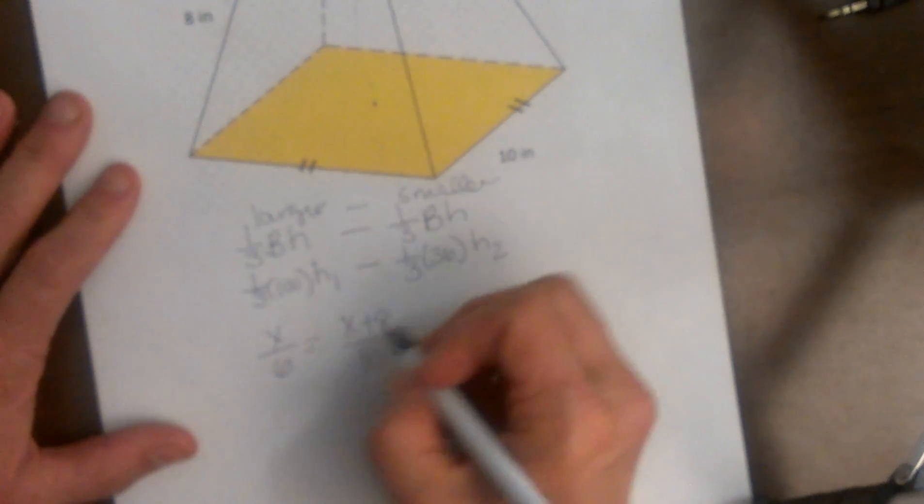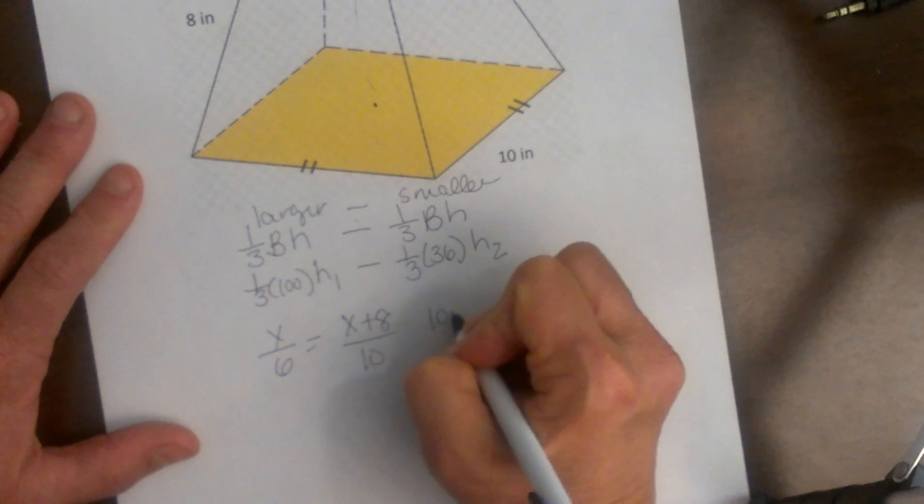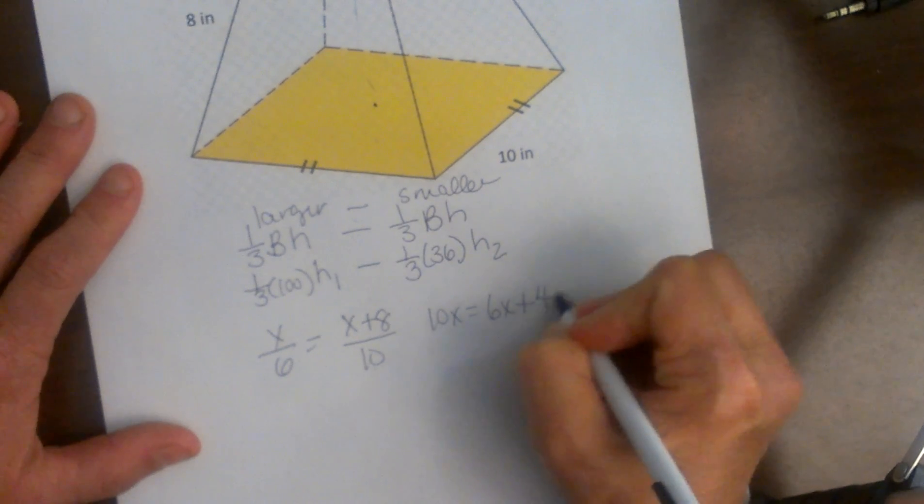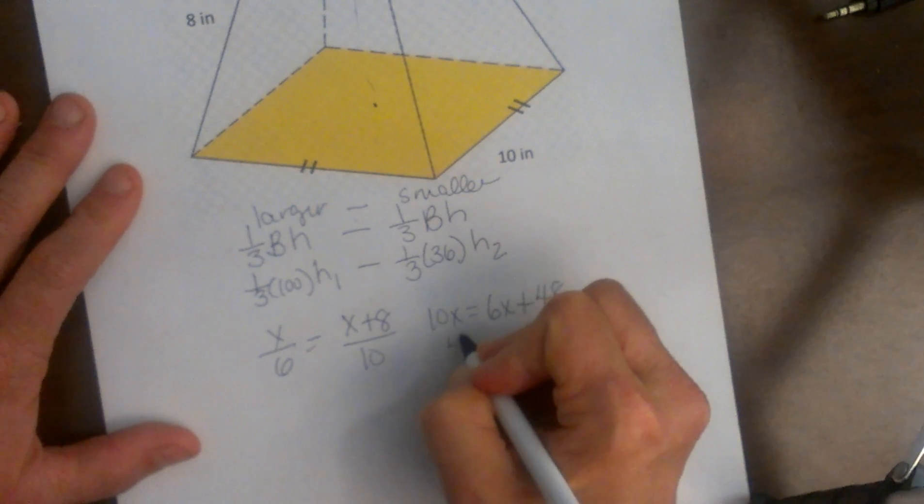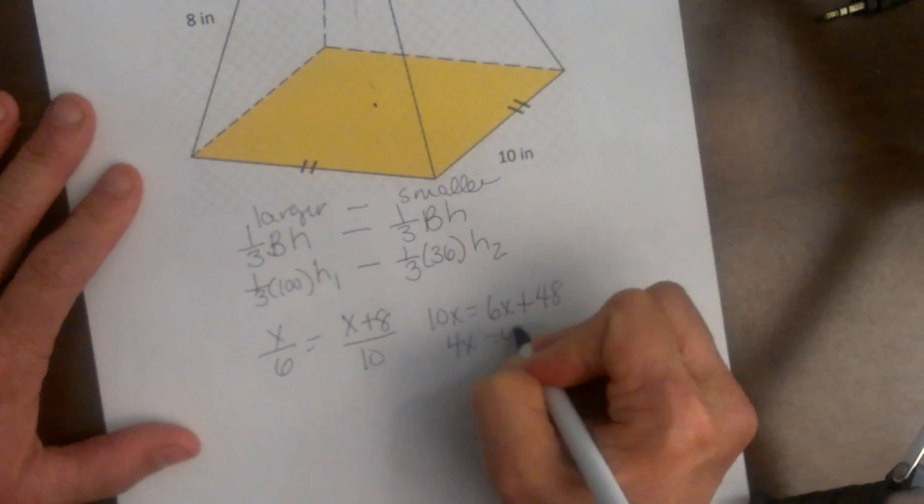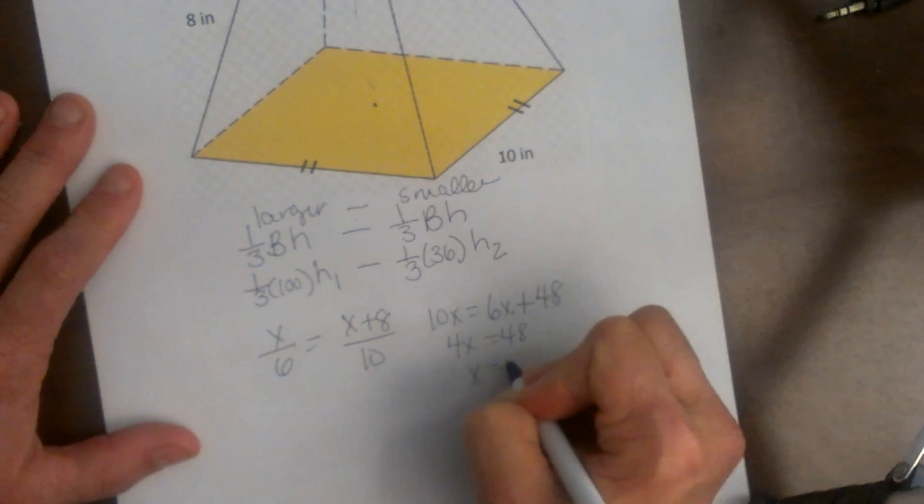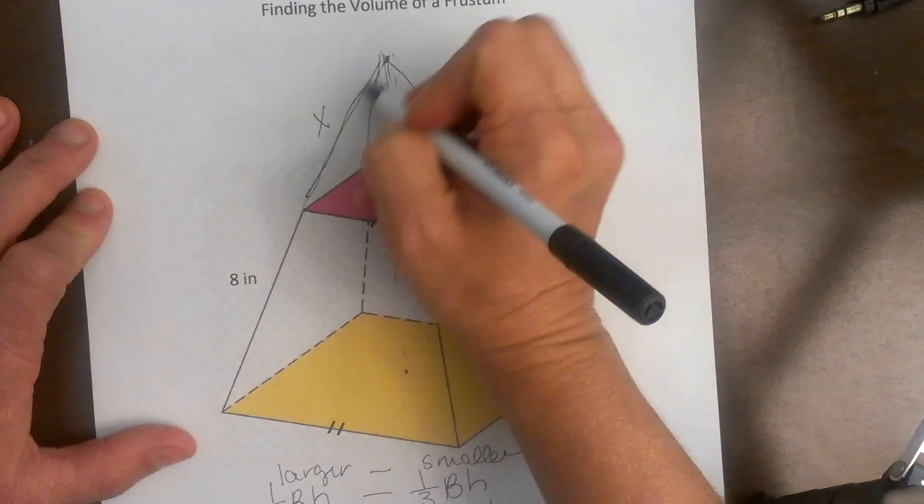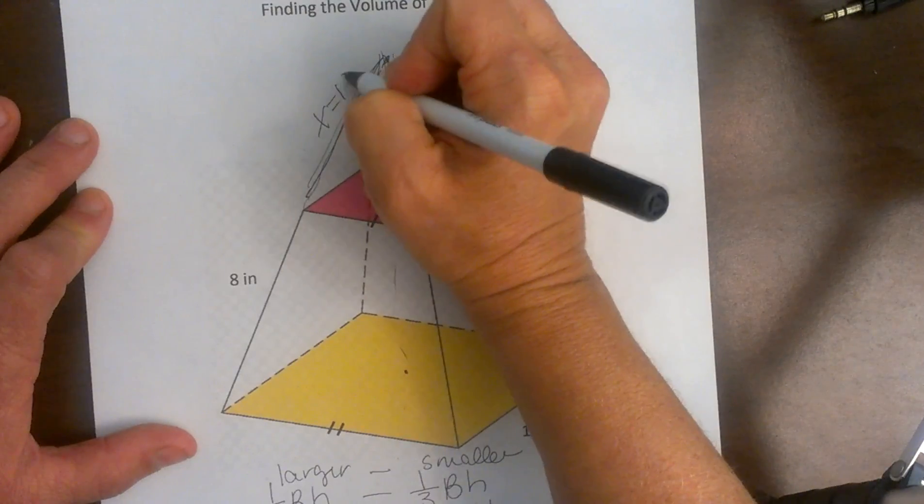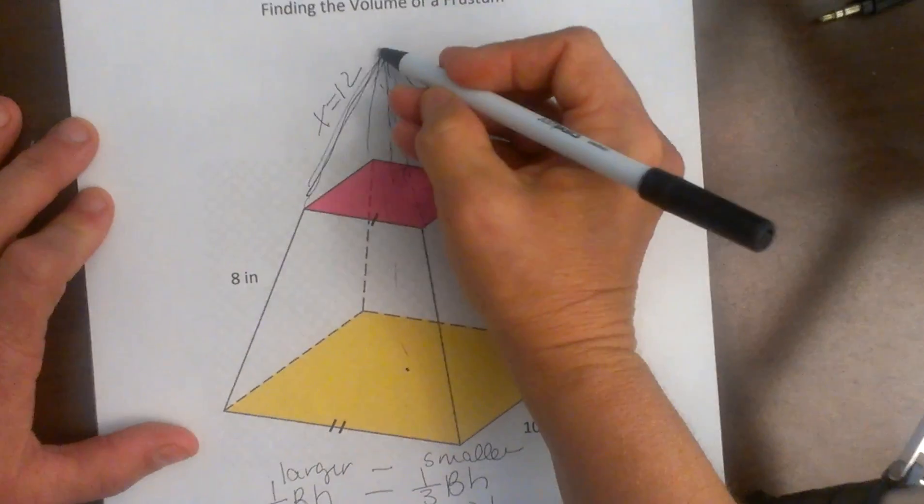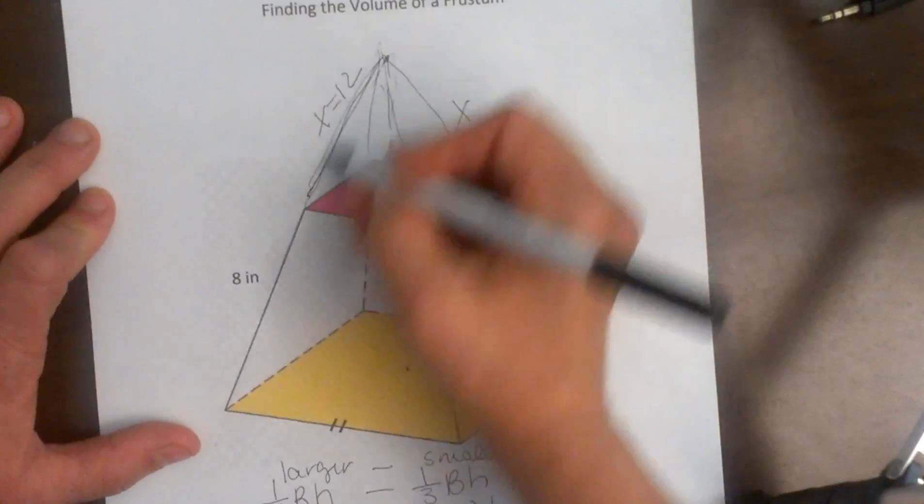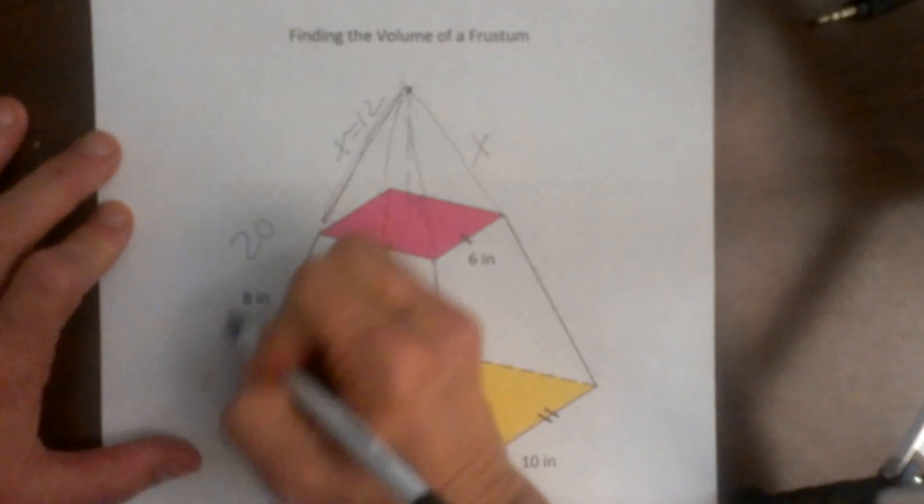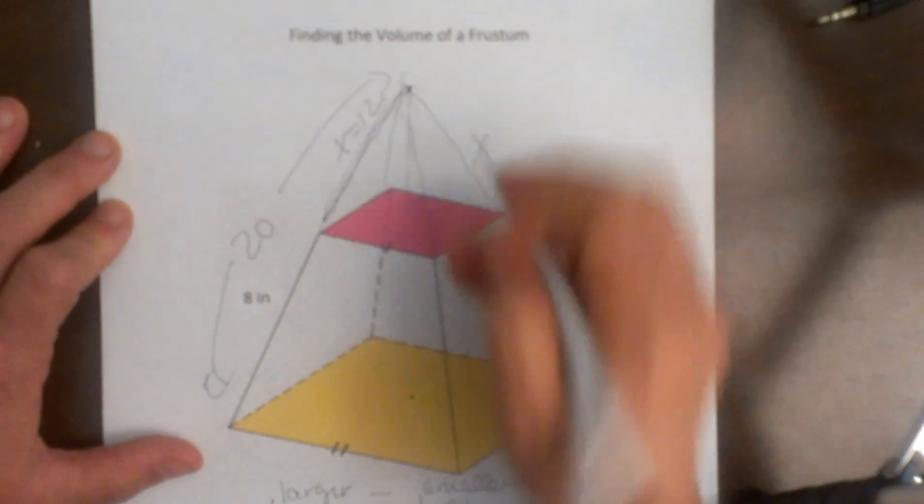Now let's solve for x. So let's do cross products. So I get 10x is equal to 6x plus 48. Subtract 6x so 4x is equal to 48. So x is 12. So that helps me a lot. I know that this length right here is 12. So what is this full edge of the entire pyramid? Well it is going to be 12 plus 8 so that is 20. So that is the length here.